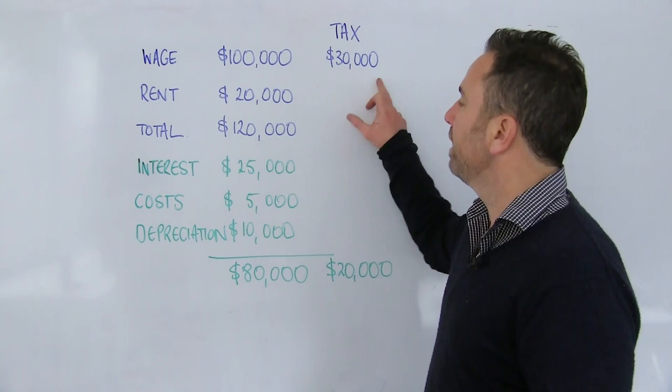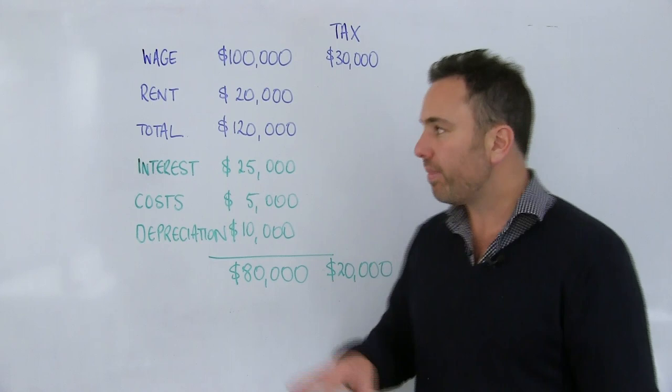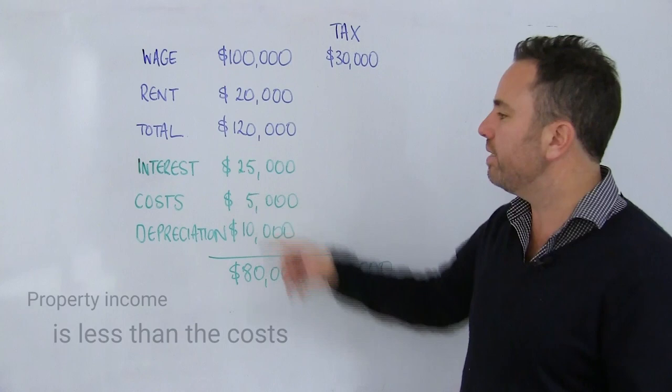Now if you own an investment property and it's generating you $20,000 worth of rental income, it takes your total income to $120,000. However, this is a negatively geared property, and a negatively geared property simply means the income that you're earning off the property is less than the costs associated with it.